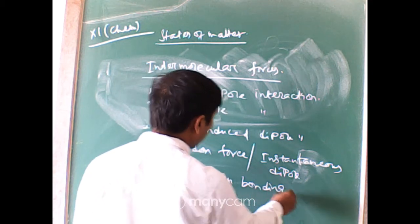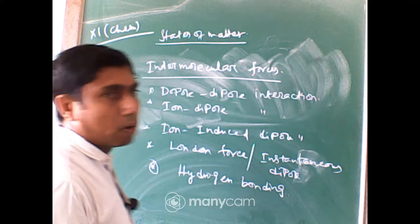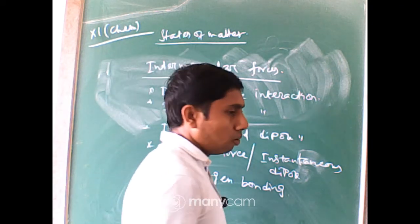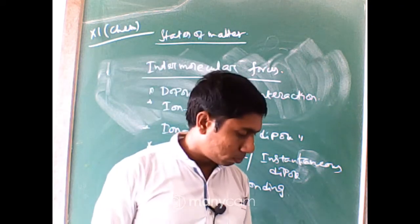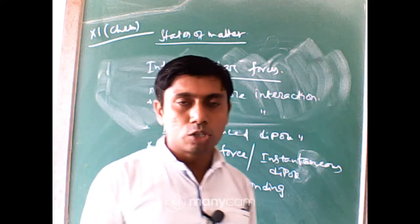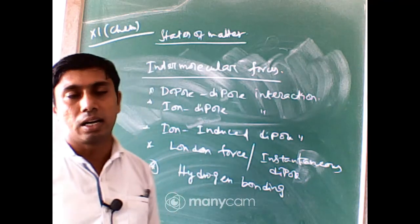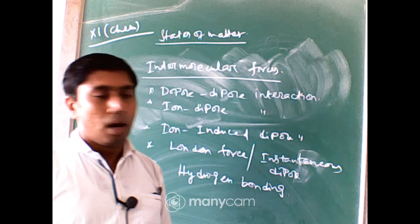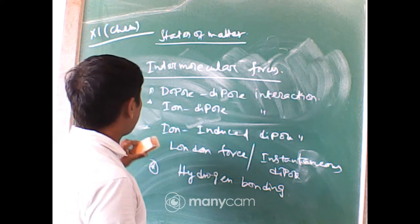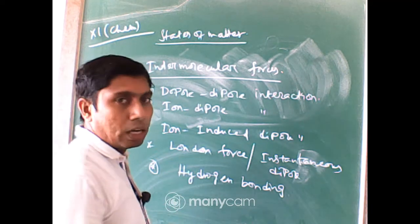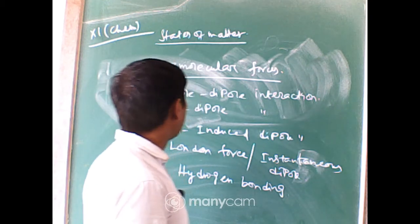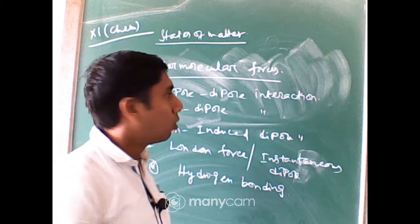Let us discuss these one by one. First, what is dipole-dipole interaction? A dipole is formed when the centers of positive and negative charge are displaced — that is, when two poles are generated within any one atom or part of the molecule, it is called a dipole.